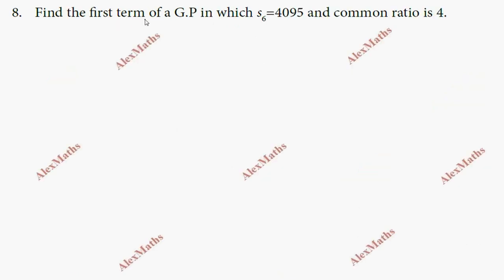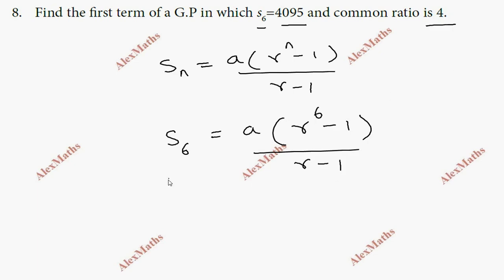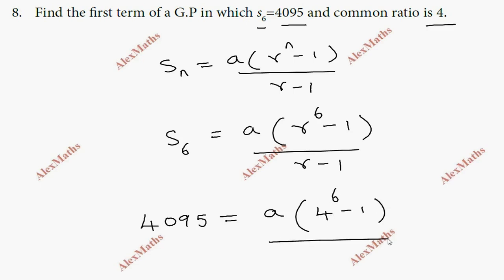Question number eight: find the first term of the GP given S_6 and common ratio r = 4. Using the formula S_n = a(r^n − 1)/(r − 1): 4095 = a × (4^6 − 1)/(4 − 1) = a × (4096 − 1)/3 = a × 4095/3.